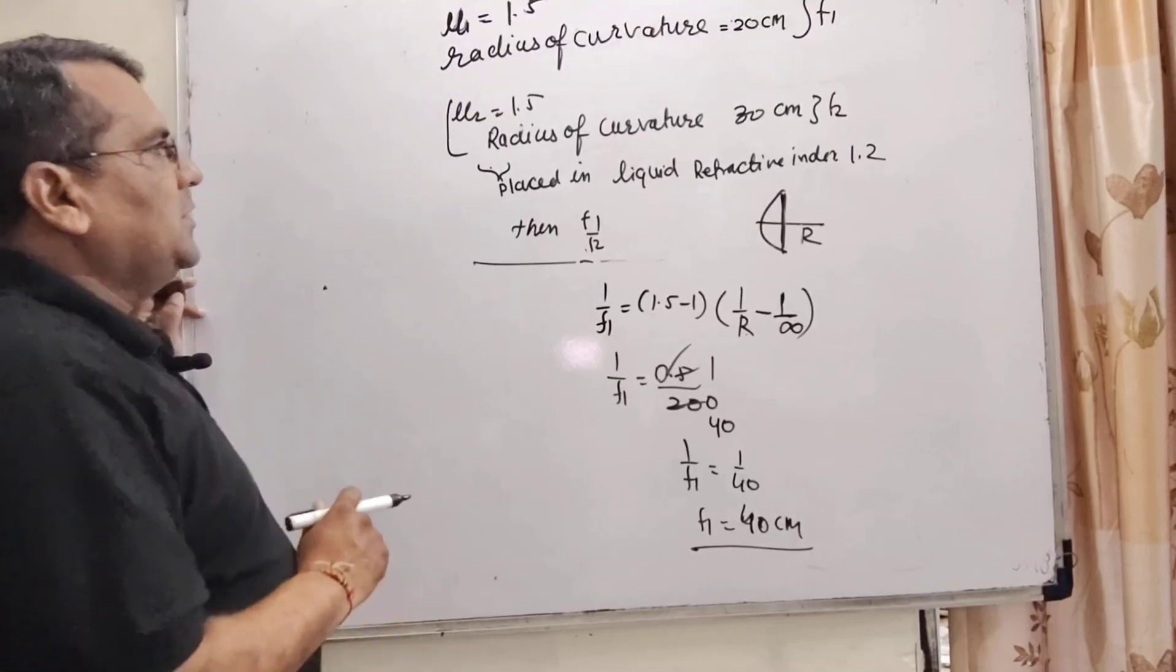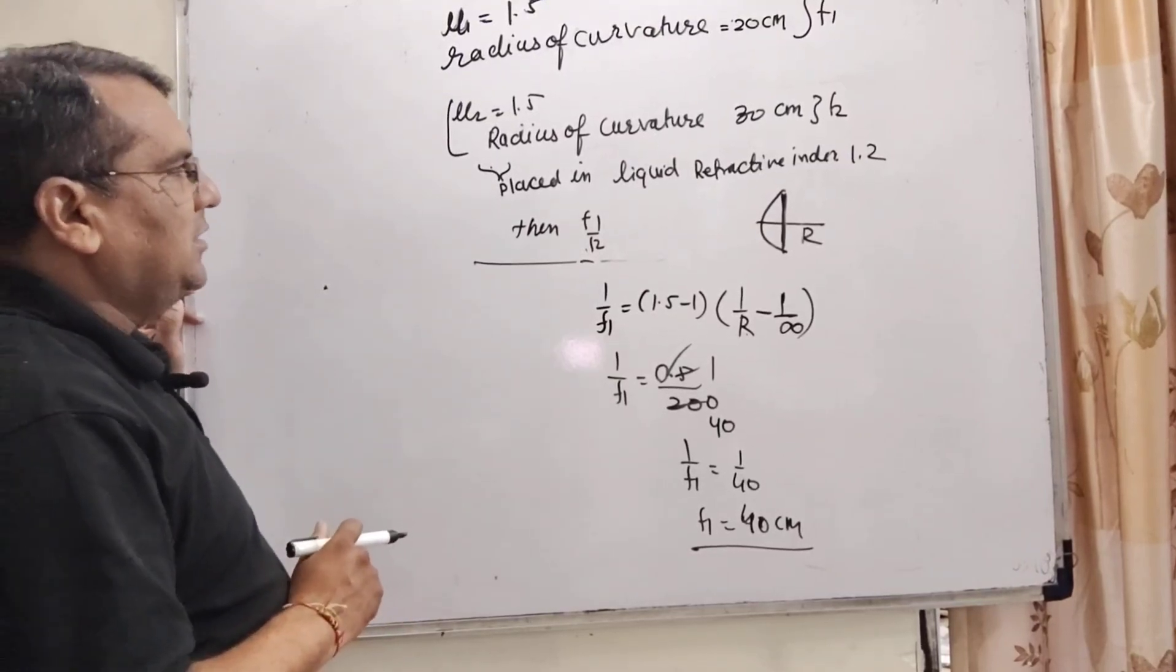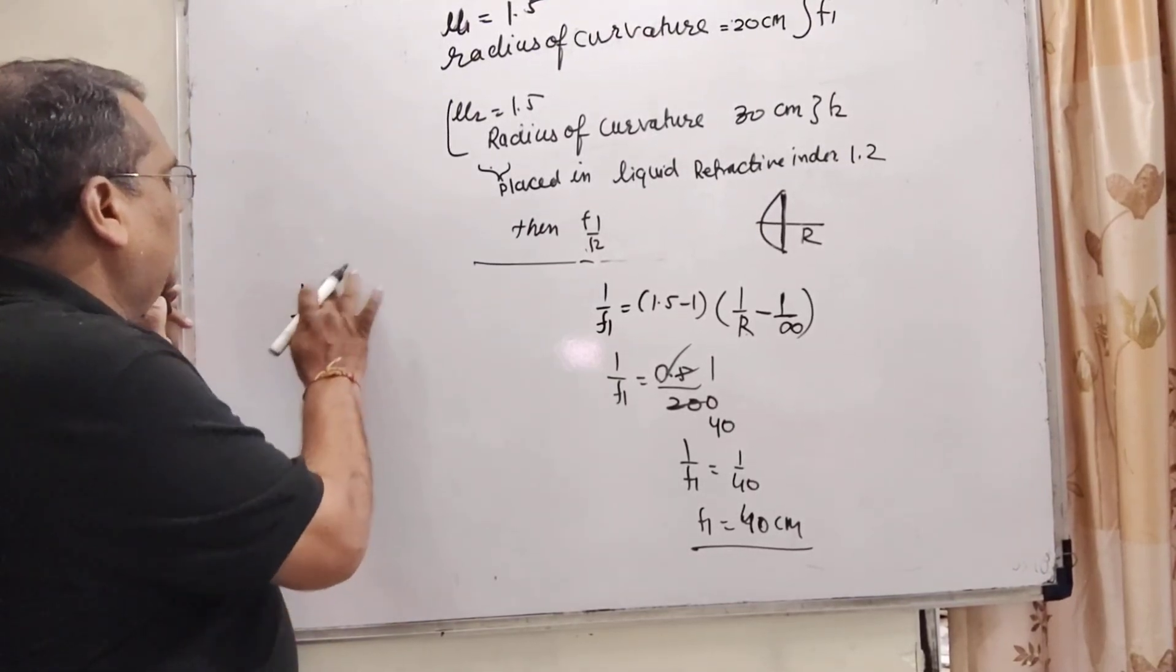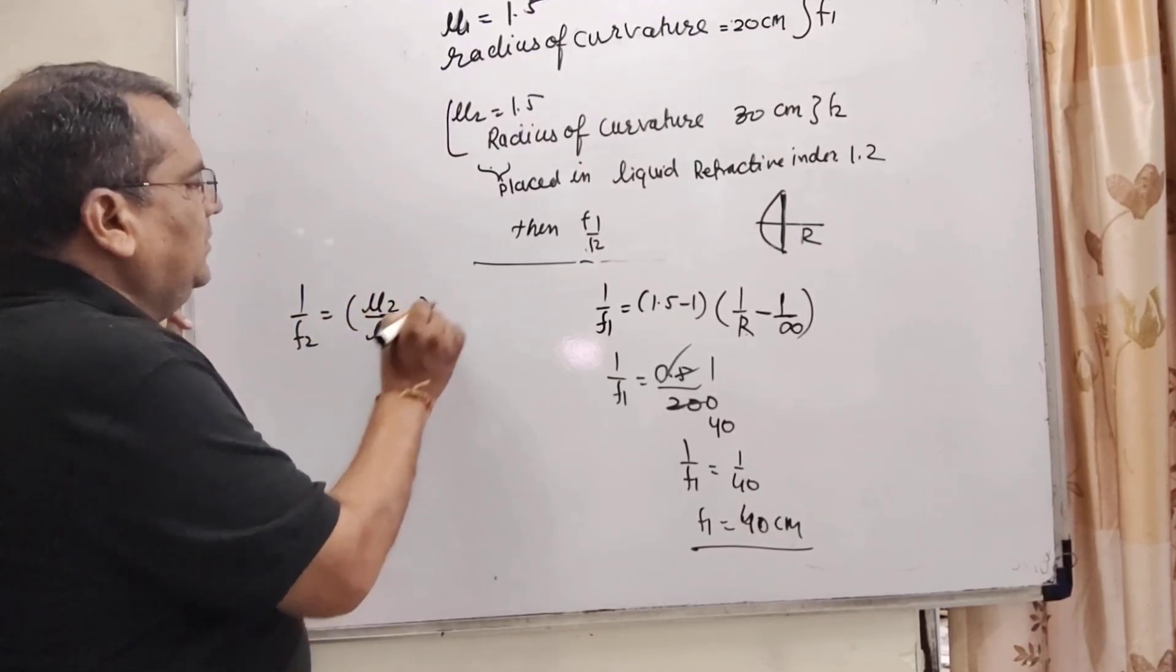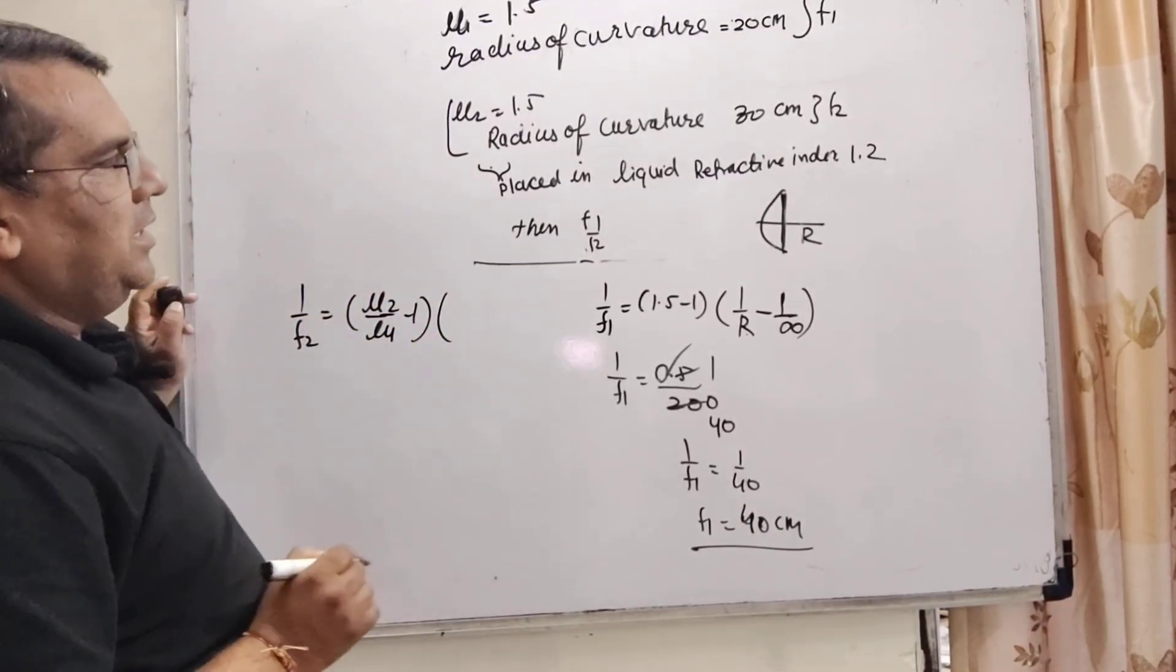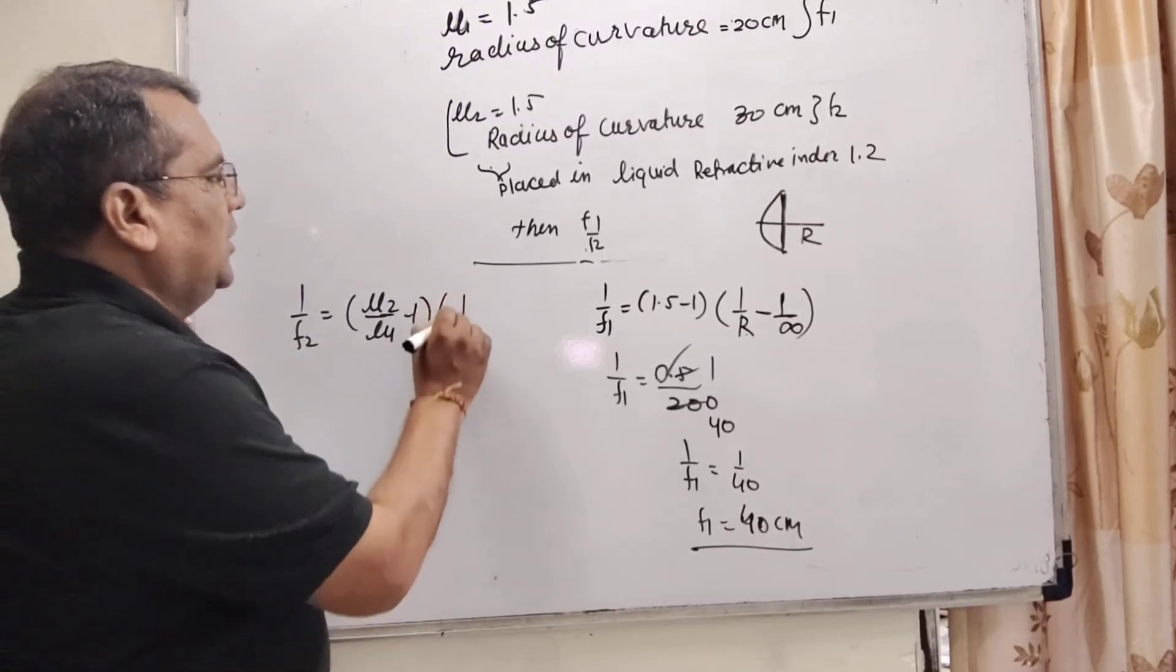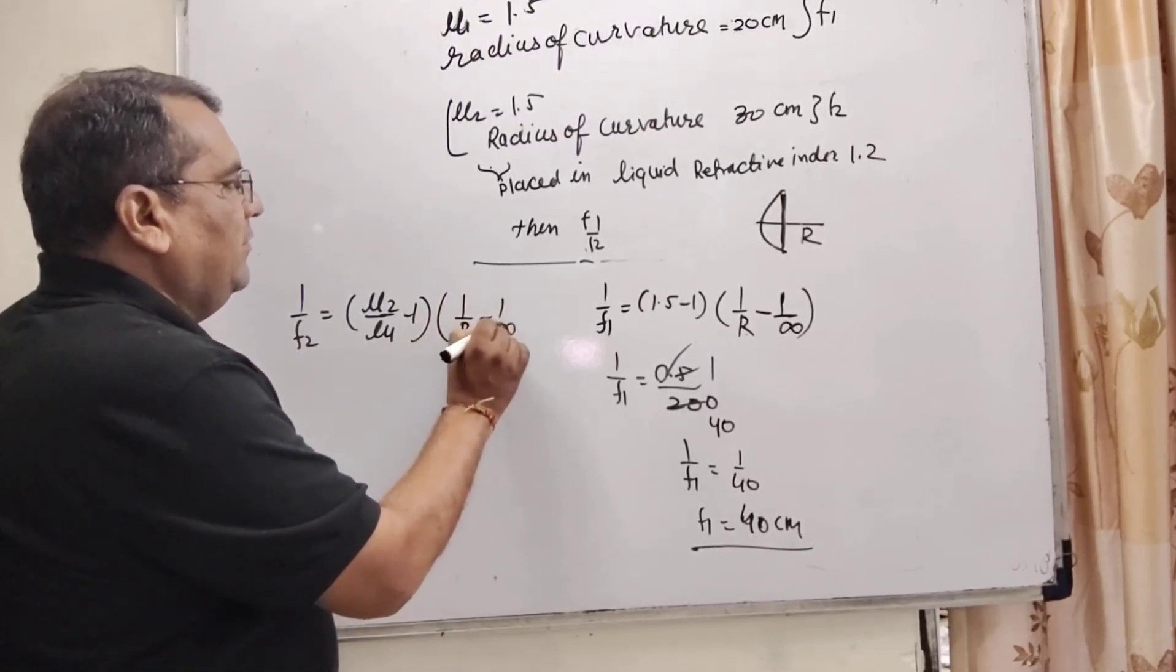For the second lens that is immersed in the liquid we have using the formula 1 by f2. Here mu2 by mu1 minus 1 and again that is the same type of lens plano convex. So therefore 1 by r minus 1 by infinity.